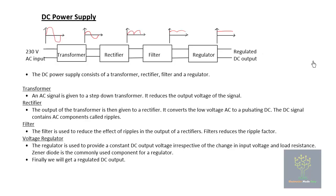The rectifier we are using will be a bridge rectifier. The bridge rectifier produces output for both the half cycles of the input AC signal. This rectified output will be having ripples — that is, it contains AC components. So the rectified DC output will be containing AC components, which are called ripples.